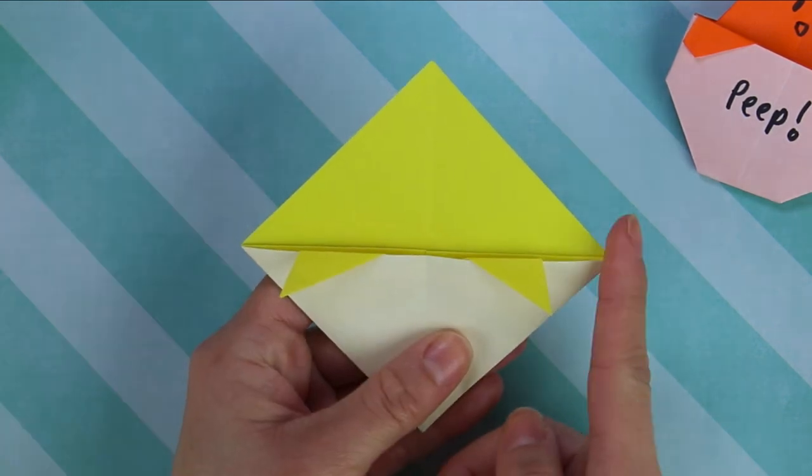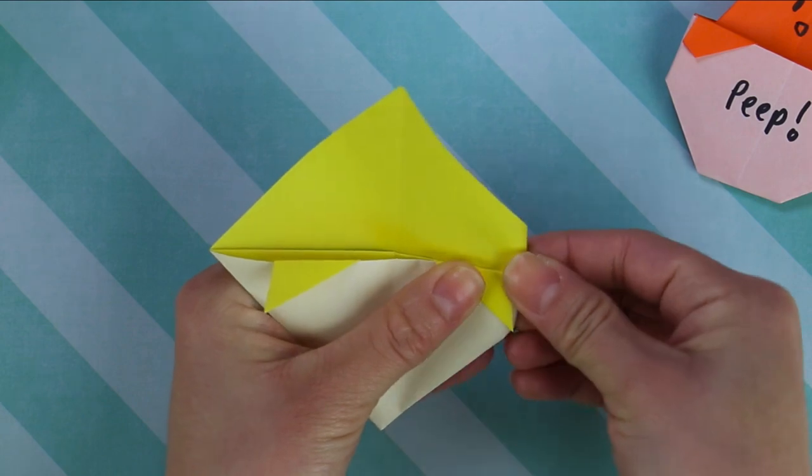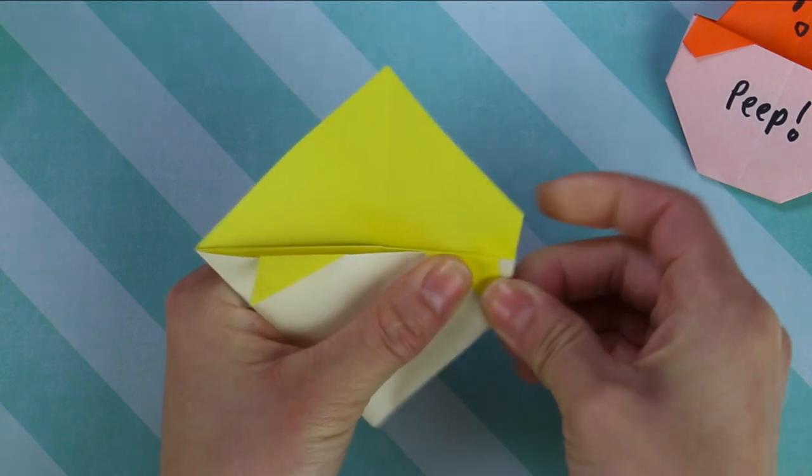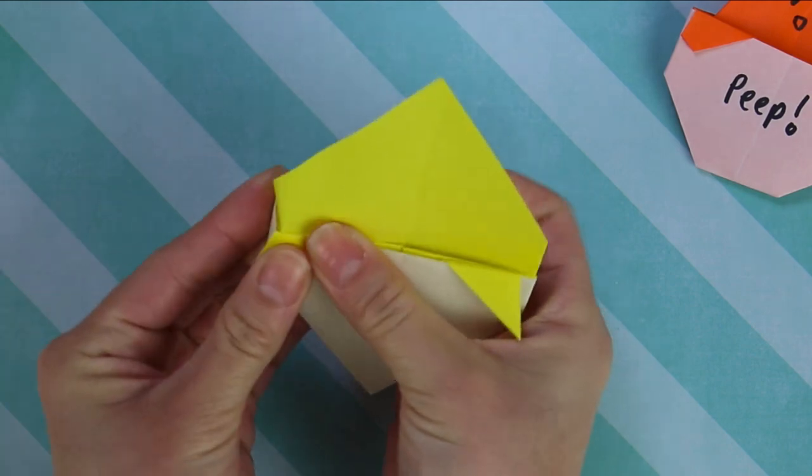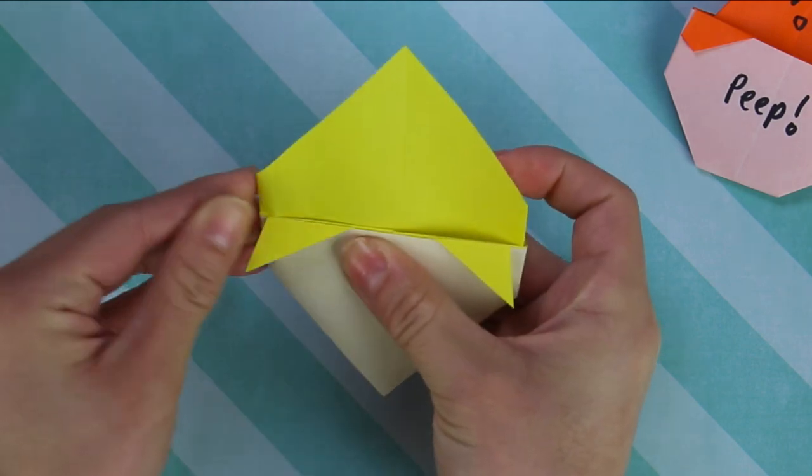Now let's round off this right corner here. You're going to fold it back. And this is going to form the egg shape right here. Do the exact same thing on the left side. Fold it over. Crease it in.